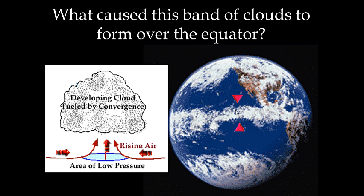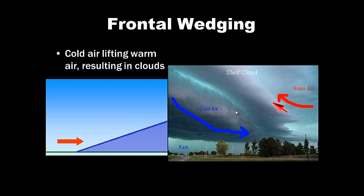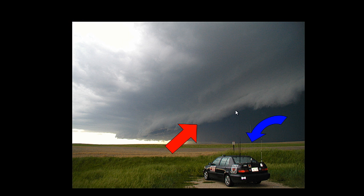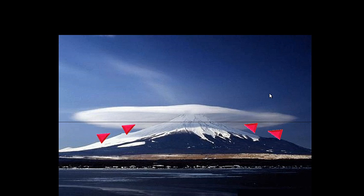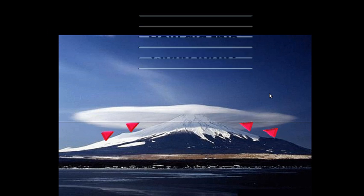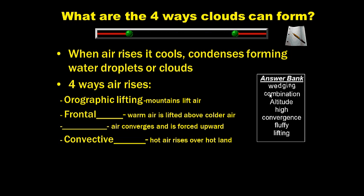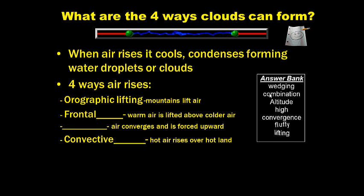Looking at this diagram: the doldrums show air hitting in convergence. Frontal wedging shows warm air being pushed over colder air. Here's cold air on one side, warm air going up over it — we get frontal wedging or orographic lifting. There's also convergence. So what are the four ways clouds can form? Summarize this information — question on the left-hand side, answer on the right-hand side. Use the answer bank to determine which word best completes the sentence. Go ahead and pause this while you write.